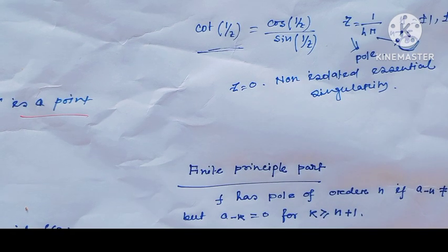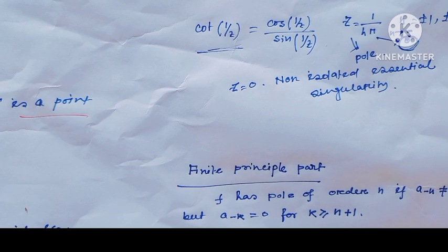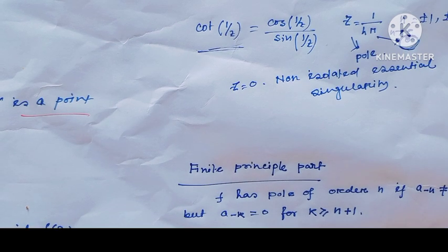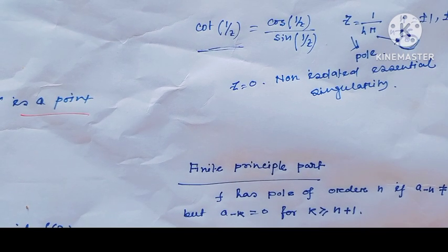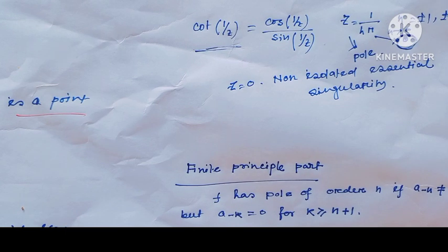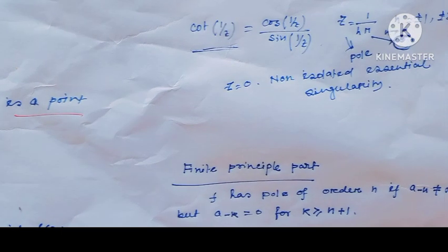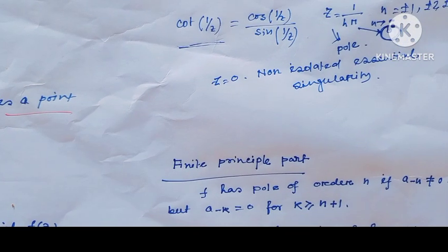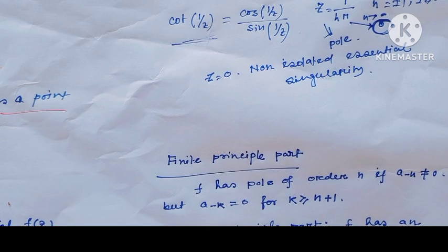At z = 1/(nπ), the function cot(1/z) is not defined, so the function has a pole at z = 1/(nπ). I hope all viewers have understood this clearly.